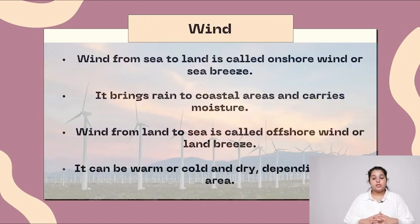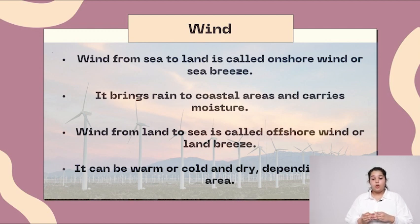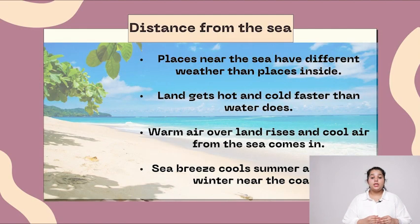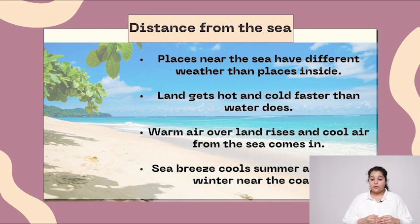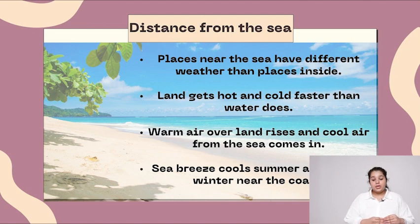Wind from sea to land is called onshore wind or sea breeze. It brings rain to coastal areas and carries moisture. Wind from land to sea is called offshore wind or land breeze. It can be warm, dry, or cold depending upon the area. Places near the sea have different weather than places further inside. Land gets hot and cold faster than water does. Warm air over land rises and cool air from the sea comes in. Sea breeze cools summers and warms winters near the coast.